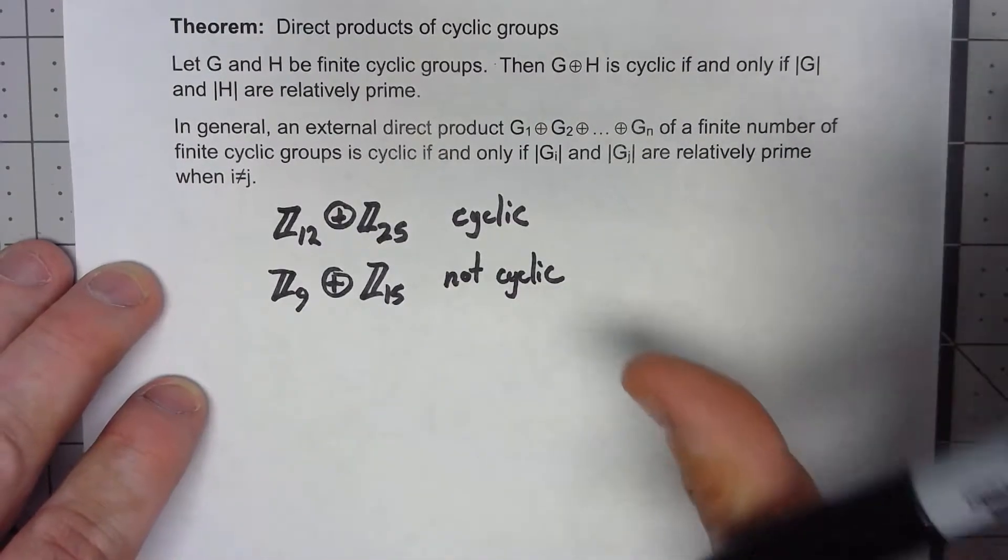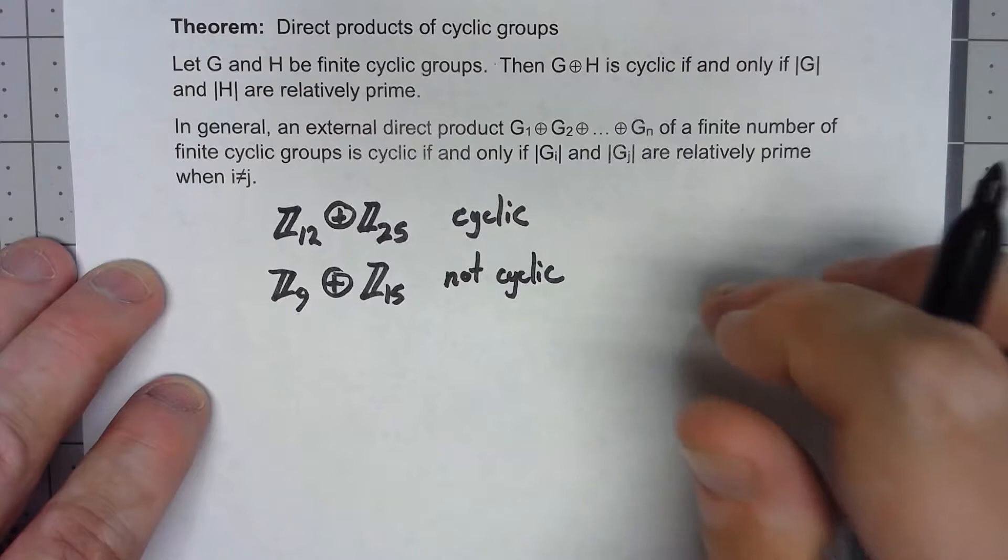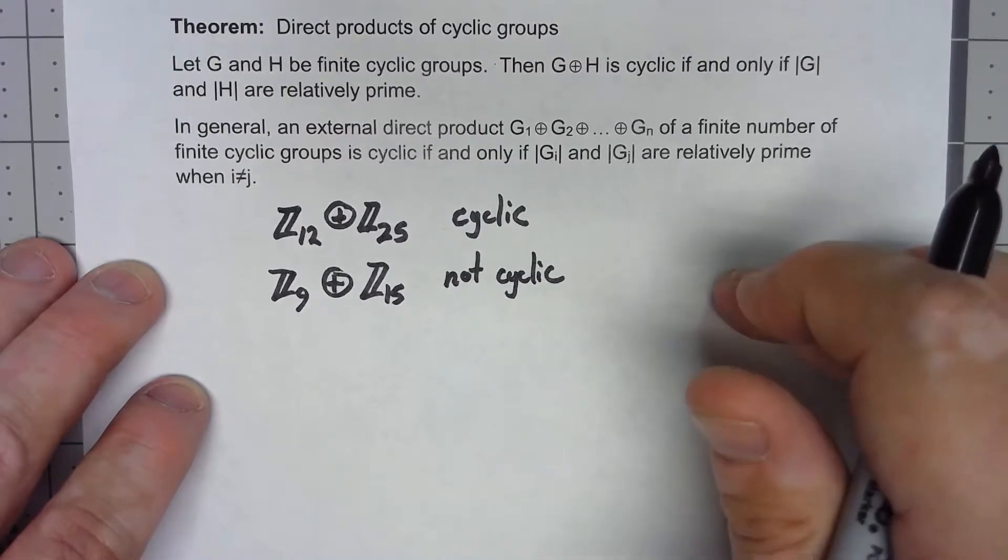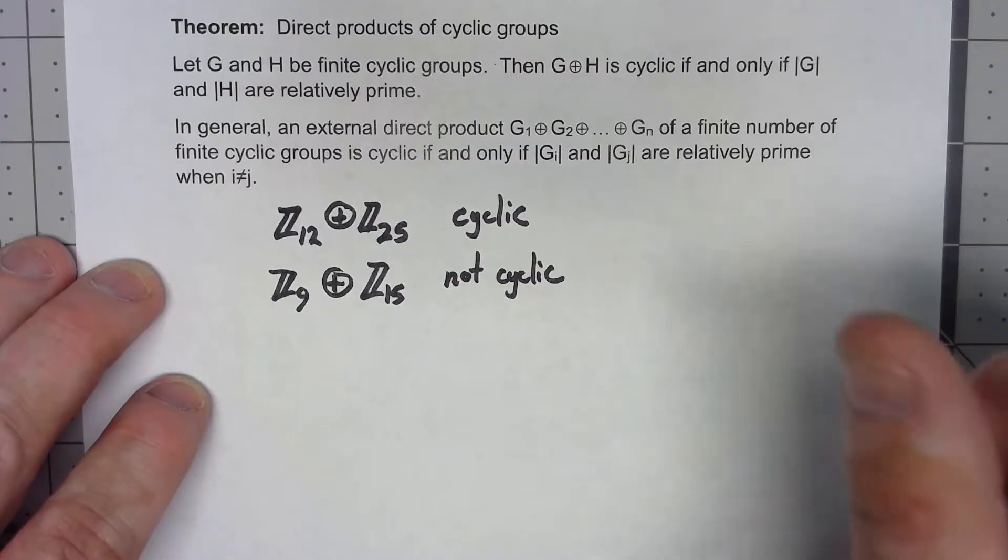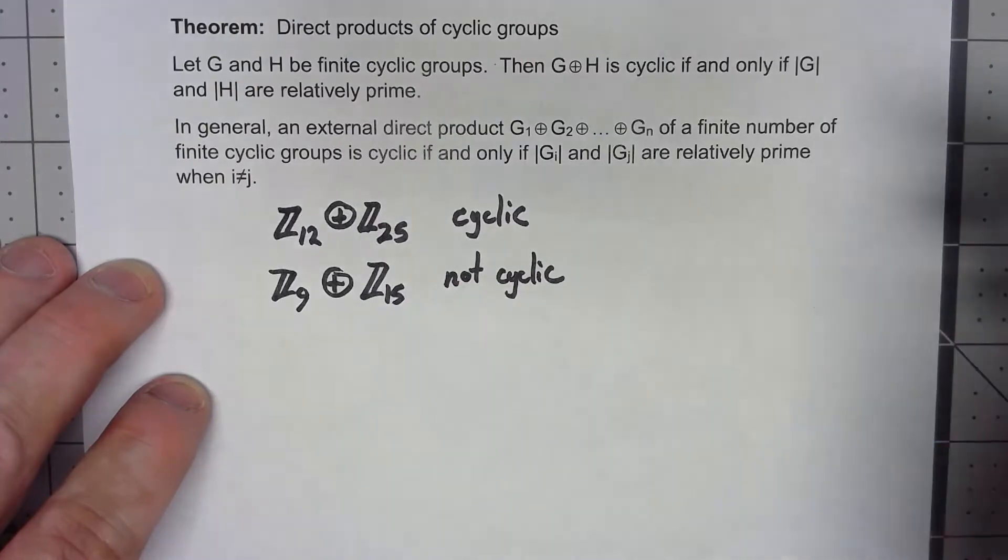I'm not going to go through the proof of this theorem, but it really pretty much follows directly from the last theorem we looked at where we looked at the order of the different elements in a direct product.